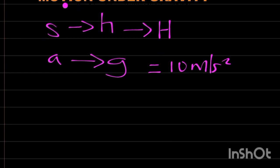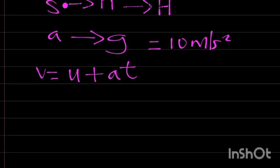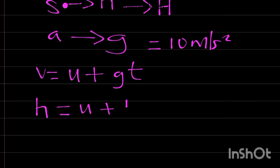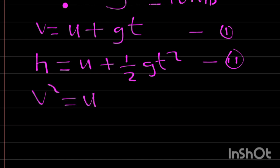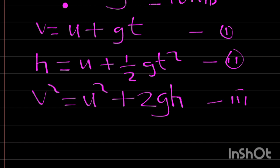Let's write the equations of motion on a straight line and convert them to the corresponding equations of motion under gravity. We have V equals U plus AT. Therefore, under gravity, we change A to G, giving V equals U plus GT. The next equation: S equals UT plus half AT squared. Our S has been changed to H, giving H equals UT plus half GT squared. And the third equation: V squared equals U squared plus 2AS, which changes to V squared equals U squared plus 2GH. So these are the three equations of motion under gravity.